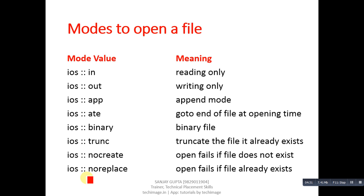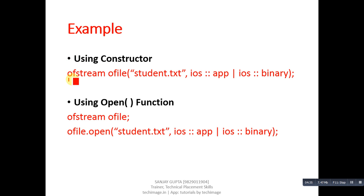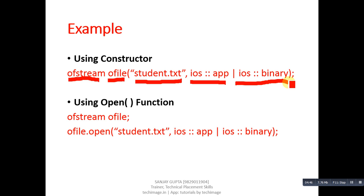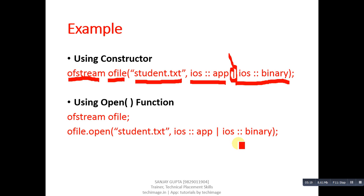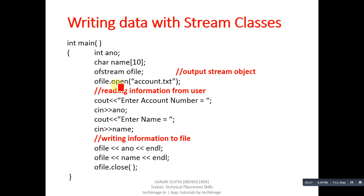Here is an example using the constructor with multiple modes: ofstream class, ofile object, the file name, then ios::app and ios::binary combined using the OR operator. If we want to use multiple modes, we use this OR operator. Similarly with the open function: ofstream class, ofile object, then ofile.open with the file name and the modes ios::app and ios::binary. These modes can be used with both the constructor and the open function.